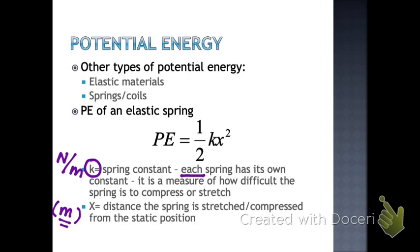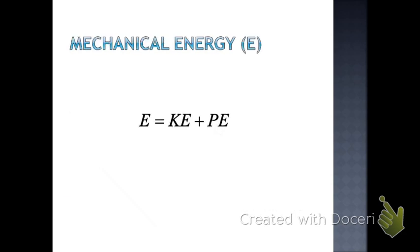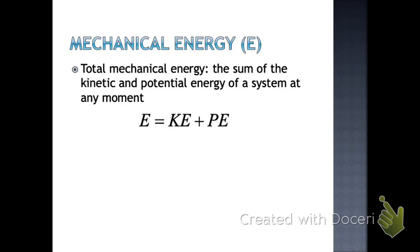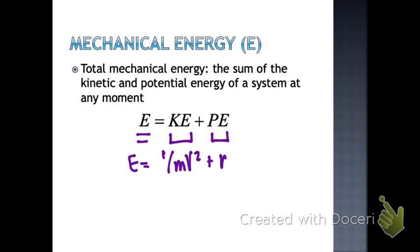Now we're going to look at what's called mechanical energy, which is the total energy in a system. If an object has both kinetic and potential energy, that's called its mechanical energy. An object's mechanical energy E is measured by adding kinetic energy plus potential energy. You could write E equals one-half mv squared plus mgh — kinetic plus potential — which is the energy at one point in the system.